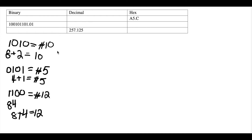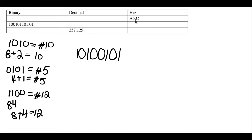Now if we have these three numbers being represented, we just have to put them all together. We start with A, which is 10, so in binary it would be 1010 to represent the A portion. For number 5 we add 0101. Then we have a decimal point. And then for the C portion we add 1100 to represent 12. So this is the hex number in binary.